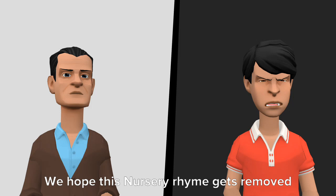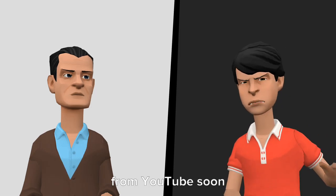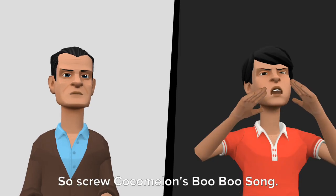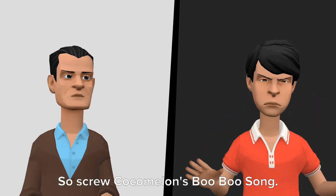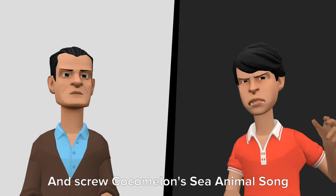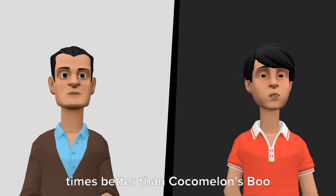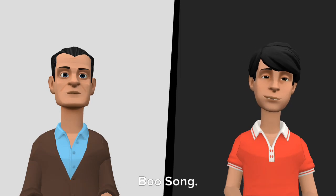We hope this nursery rhyme gets removed from YouTube soon. We don't know who likes or hates this song, anyways. So screw Cocomelon's Boo Boo Song. And screw Cocomelon's Animal Song. Michael the Vyond Guy is infinity times better than Cocomelon's Boo Boo Song. End of rant.